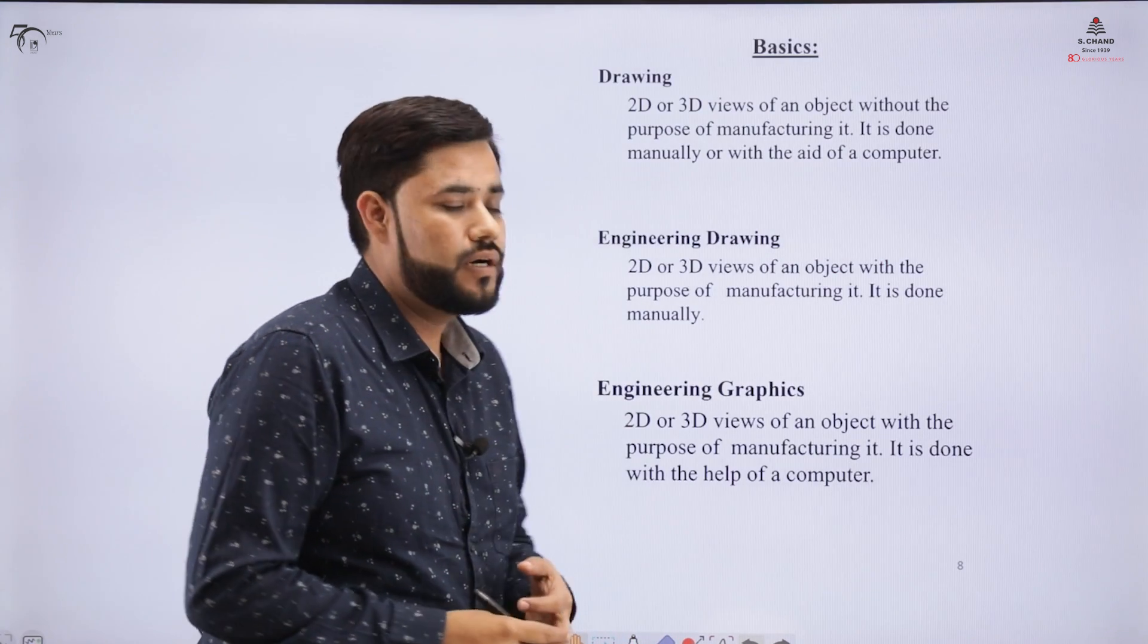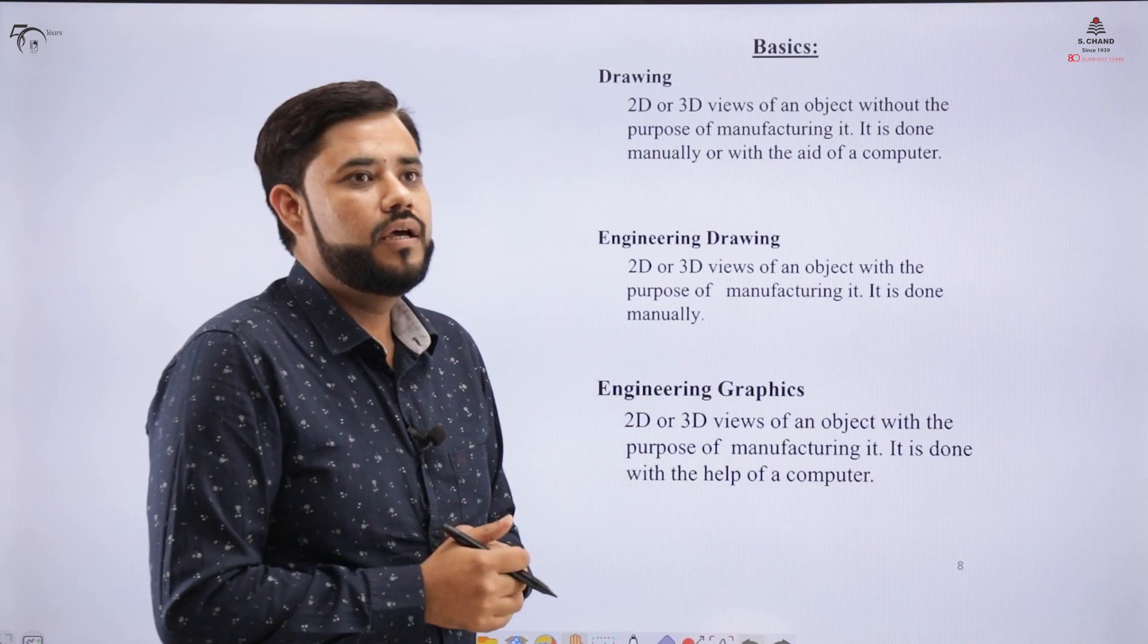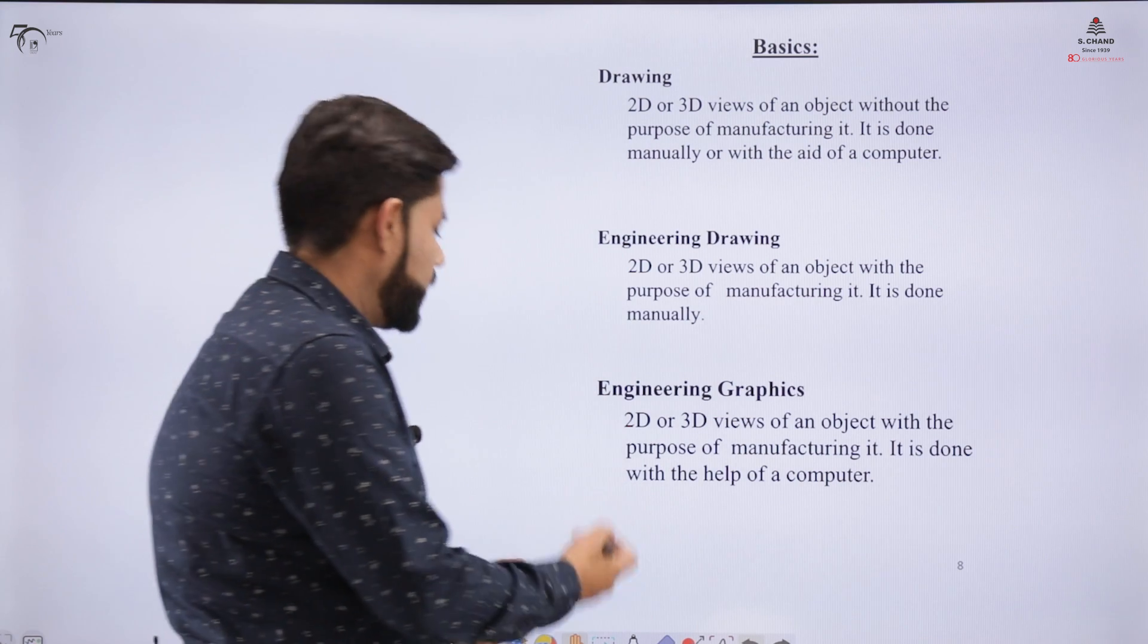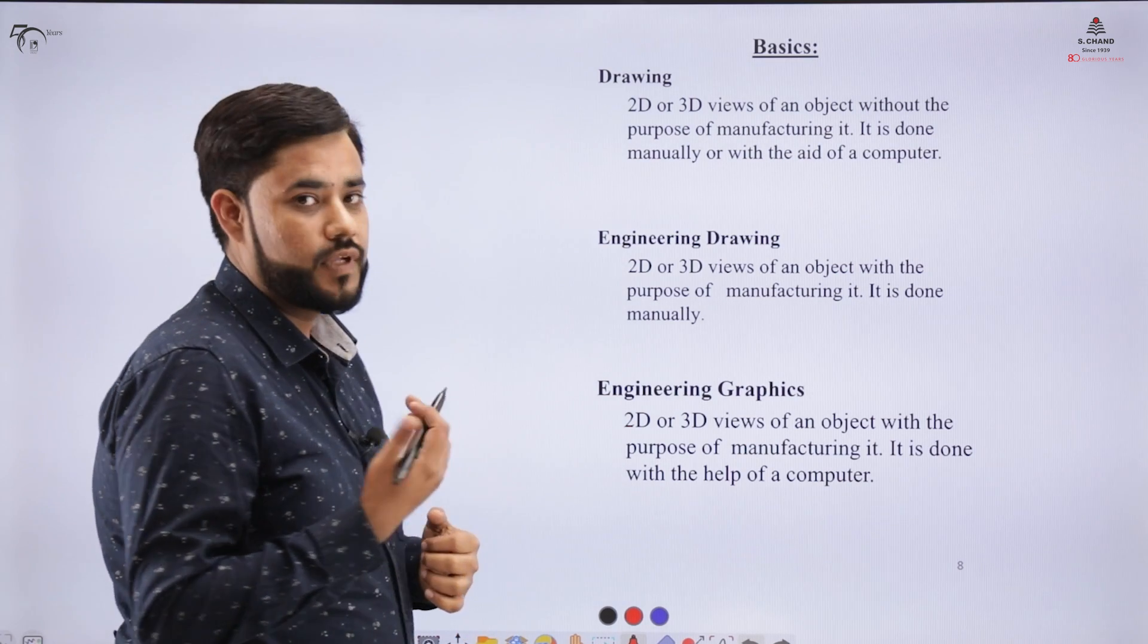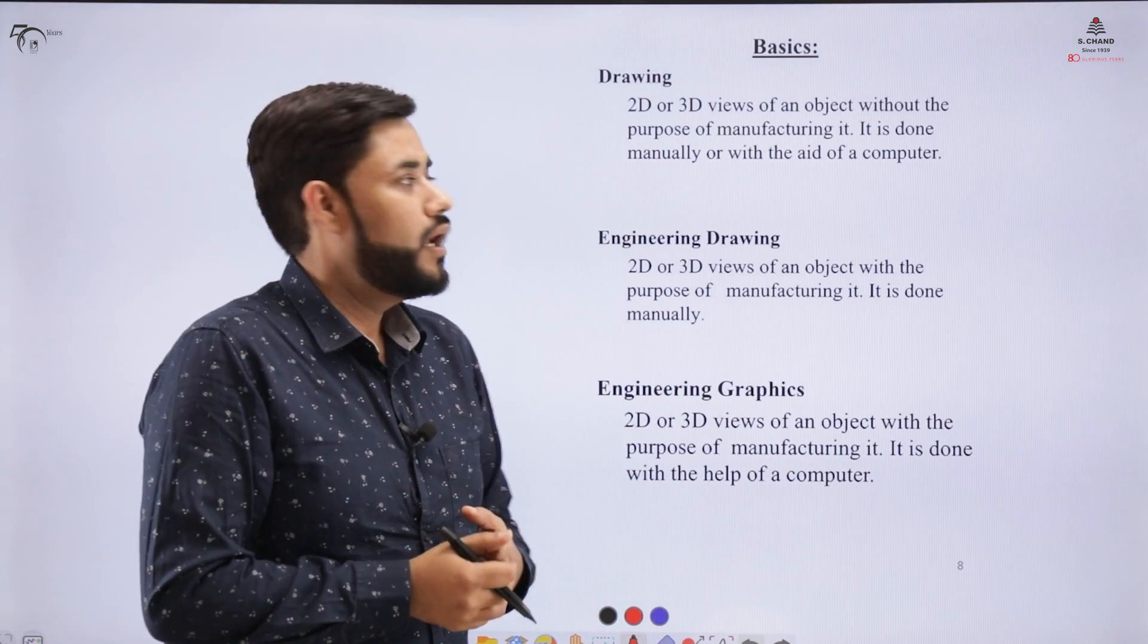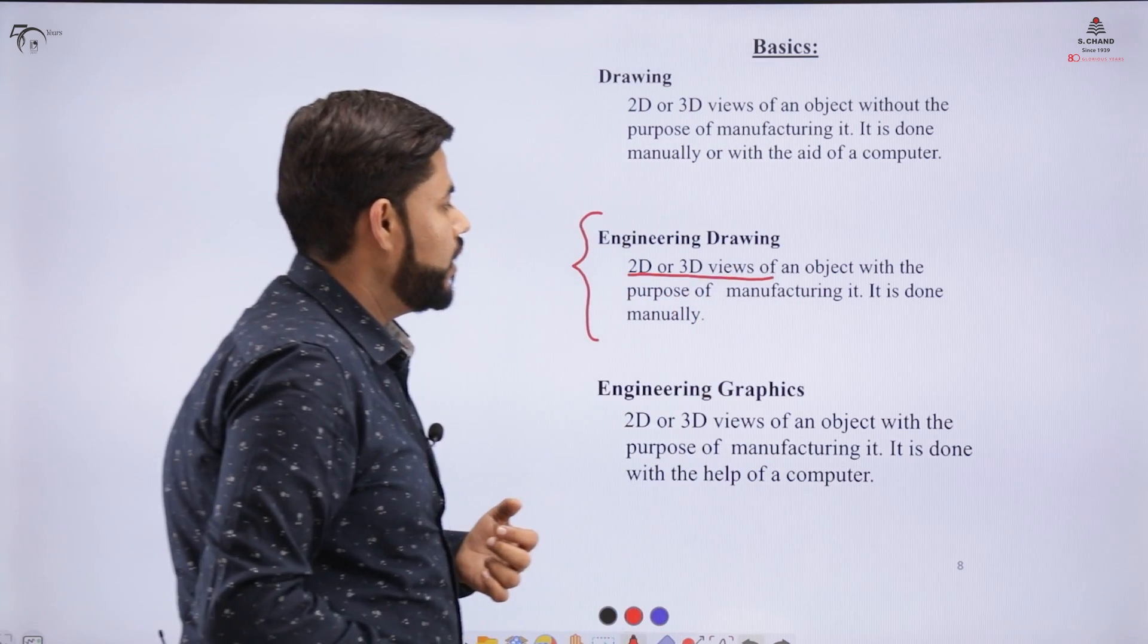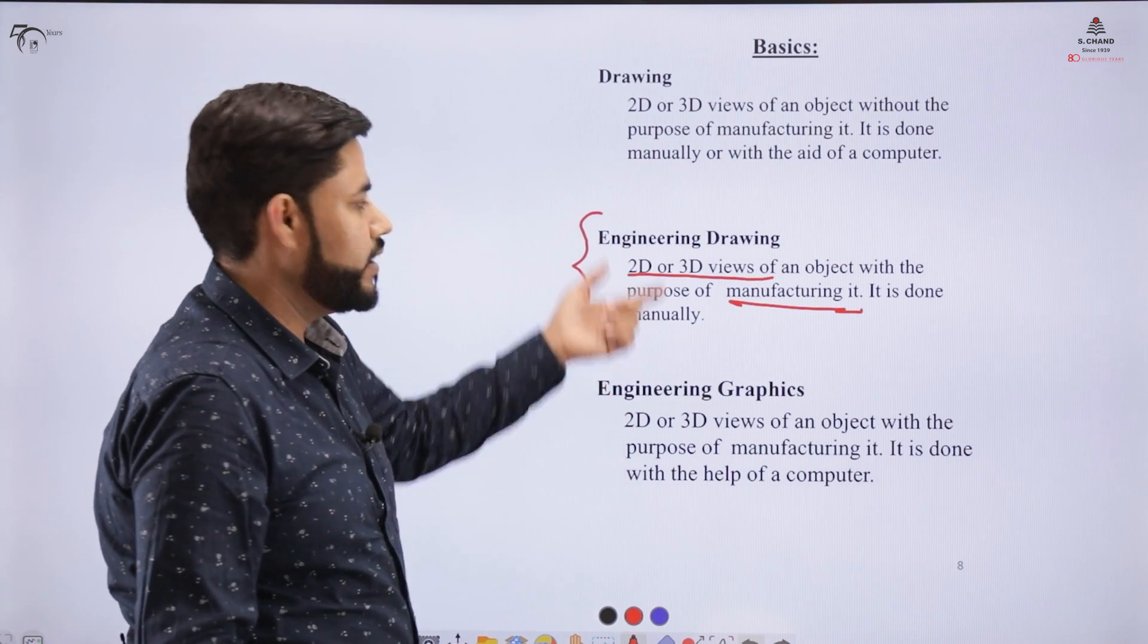So what kind of drawing are we studying? Basically there is clarity required on the nomenclatures. Drawing is any 2D or 3D view of an object made for manufacturing or not for manufacturing. If you are drawing any object and you don't want to manufacture it, that is called a drawing. If you want to specifically manufacture that component, then that is called an engineering drawing. Engineering drawing is a 2D or 3D view of the object meant for manufacturing and is done manually.